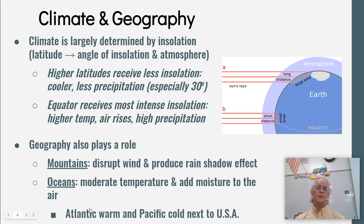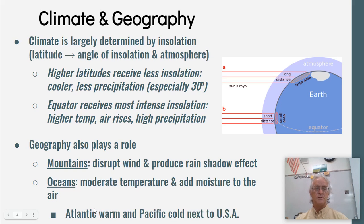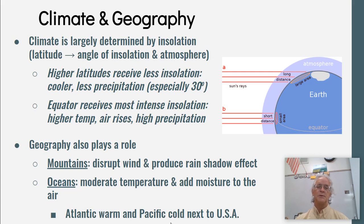The Atlantic is very warm, and that's why Georgia and Florida are so moist and it's nice to swim over there. The Pacific Ocean is very cold, and therefore there's less precipitation on California.